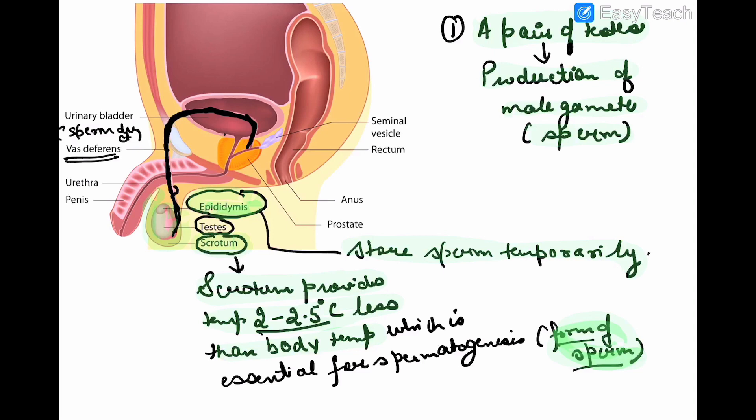The vas deferens joins the tube coming from the urinary bladder, and hence the penis is the common opening for both sperm as well as urine.